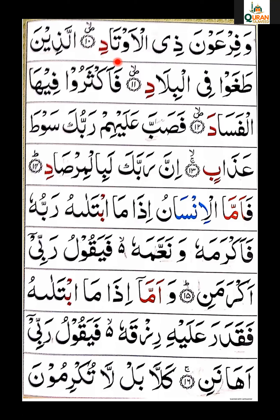وَفِرْعَوْنَ ذِي الْأَوْتَادْ۔ آگے دیکھئے آیت نمبر 11: اَلَّذِينَ طَغَوْا فِي الْبِلَادِ۔ اَلَّذِينَ — حمزہ کو ہم زبر دے کر لام سے ملائیں گے — اَلَّم زبر، اَلَّ۔ یہاں پر یا ساکن ہے اور اس سے پہلے دال پر زیر کی حرکت ہے، تو یہ یا مدہ ہوگا، اس کو تھوڑا سا ہم کھینچیں گے — دو حرکات، ایک الف کے برابر۔ دال کو پڑھتے وقت خیال رکھئے گا، ذا نہیں پڑھنا ہے بلکہ دا — اَلَّذِينَ۔